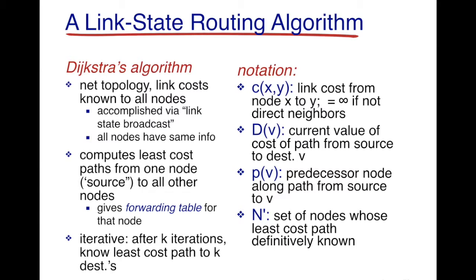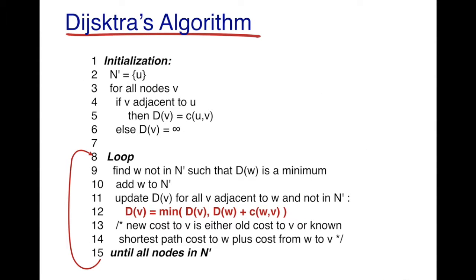Initially, N prime would be just the source, because the source node's path from itself to itself is known. As the algorithm moves forward, the source would know the paths to certain nodes, and when the algorithm terminates, you will know the path from the source to all other nodes in the network. Let's first look at the algorithm, then work through a couple of examples.